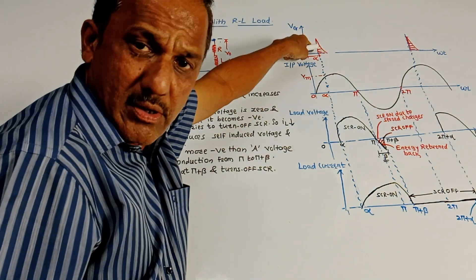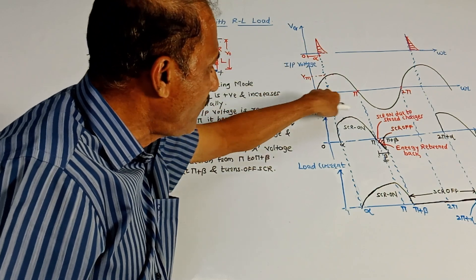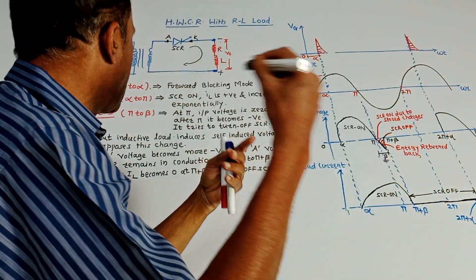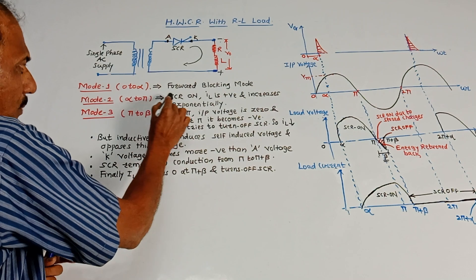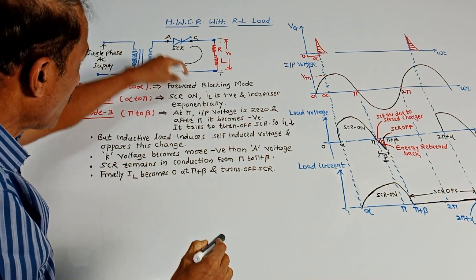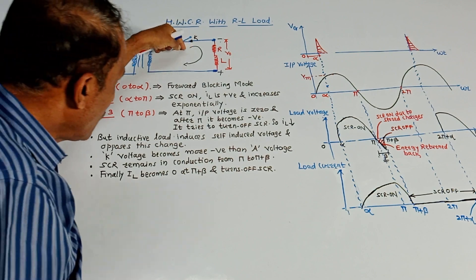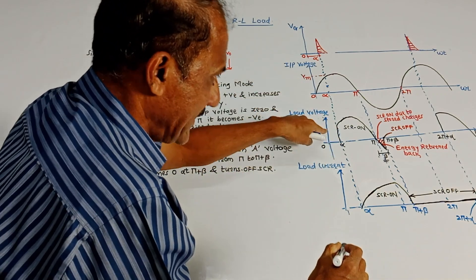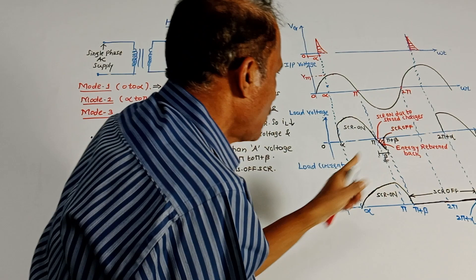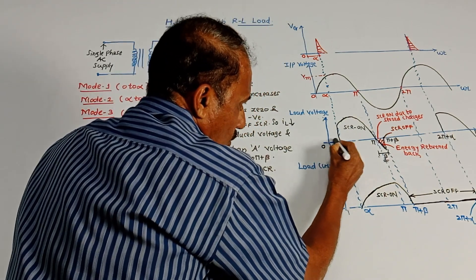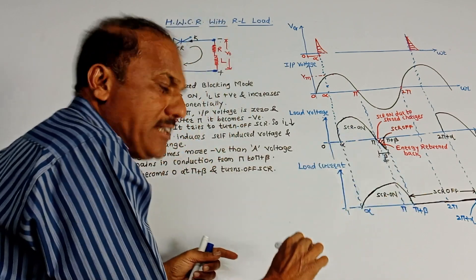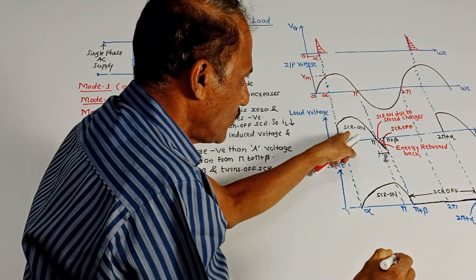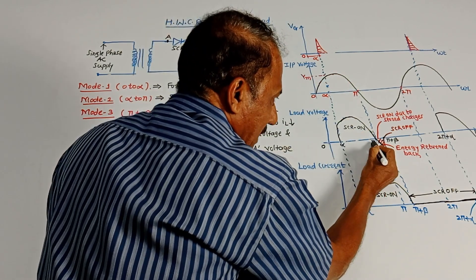At alpha, the gate pulse is applied. From alpha to pi there is a positive half cycle, so from alpha to pi SCR will start conducting — SCR is switched on. Whenever it is on, it acts like a closed switch, so load current is positive. For the load voltage waveform: from zero to alpha there won't be any load voltage because SCR was in forward blocking mode. At alpha the gate pulse is applied, this is a positive input cycle so SCR is on, and the load voltage waveform appears from alpha to pi.